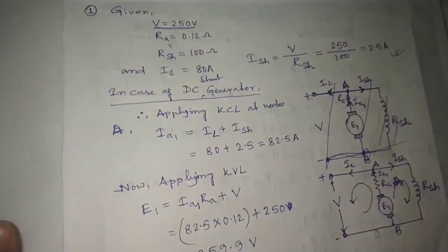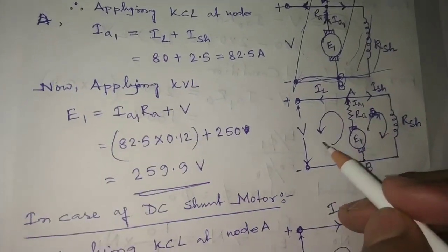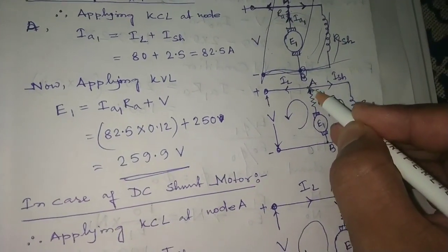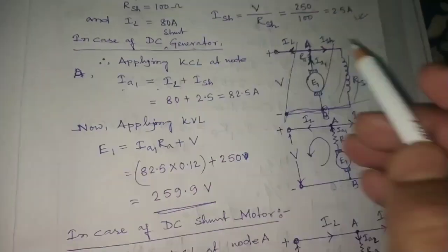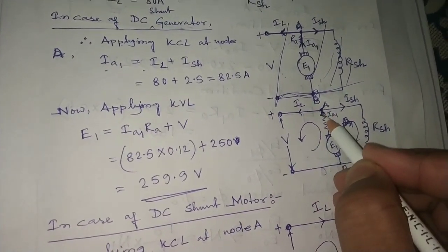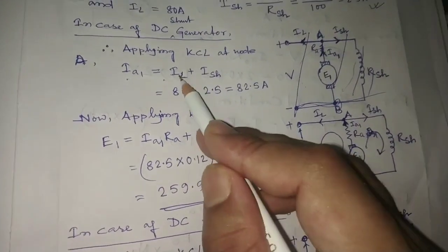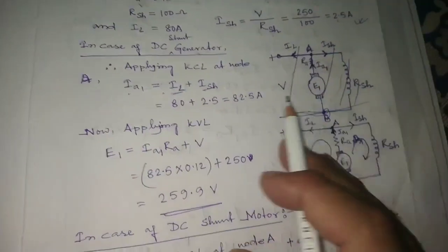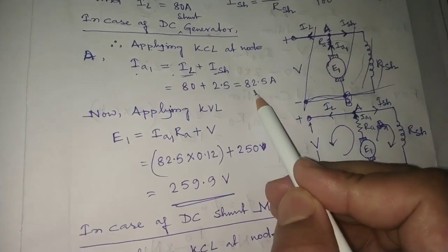For the DC shunt generator, we draw the circuit diagram and apply KCL at the node. The incoming current is Ia1, and the outgoing currents are IL and Ish. So Ia1 equals IL plus Ish. IL is 80 amperes and Ish is 2.5 amperes, so the armature current for the DC shunt generator Ia1 equals 82.5 amperes.